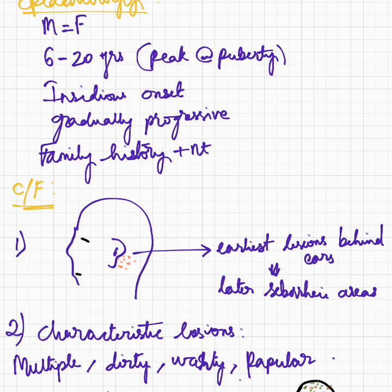Coming to epidemiology, both males and females are equally affected. The age of onset can be anywhere between 6 to 20 years of age and it peaks at puberty. The onset is usually insidious and gradually progressive, and since this is an autosomal dominant disorder, a family history is obviously going to be present.